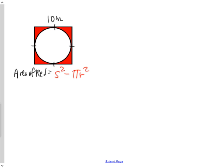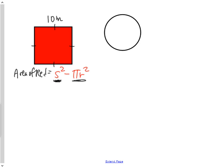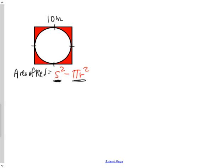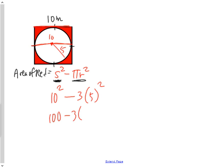For the composite shape showing the area of the red region, the formula is the area of the square minus the area of the circle. Since the square is 10 by 10, the diameter of the circle is 10, making the radius 5. The area equals 10 squared minus π times 5 squared. Do exponents first, then multiplication, and you get a final answer of 25 meters squared.